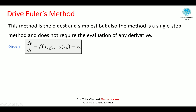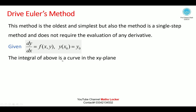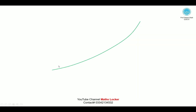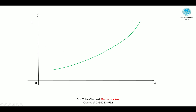Given dy/dx = f(x, y) with y(x₀) = y₀, this is an initial value problem. The integral of the above is a curve in the xy-plane. Since a smooth curve is practically a straight line for a short distance from any point on it, we have an approximate relation. This gives a graphical solution of the initial value problem.